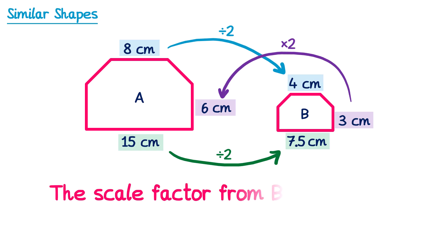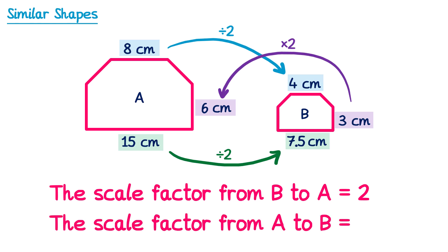The scale factor from shape B to shape A is 2, since when going from B to A you double all the lengths. But the scale factor from A to B is different — it's not 2 or negative 2. When we express a scale factor of enlargement we must multiply by some number; we can't divide. So instead of dividing by 2, think about what you multiply 8 by to get to 4: you're halving it, which is the same as multiplying by one half. So the scale factor from A to B is one half.